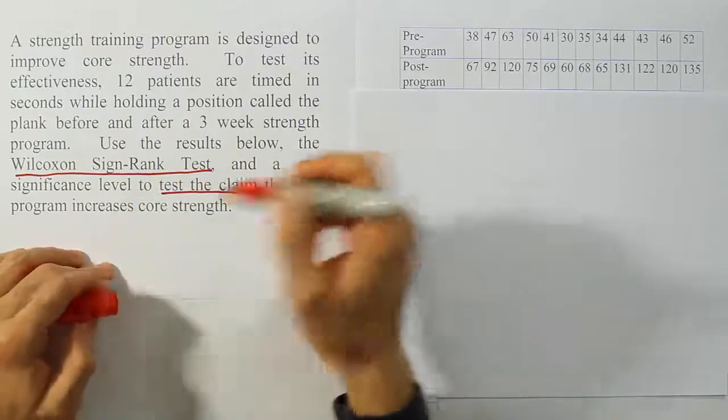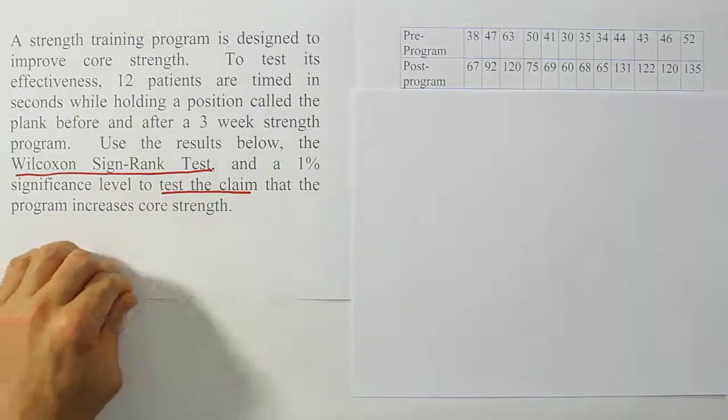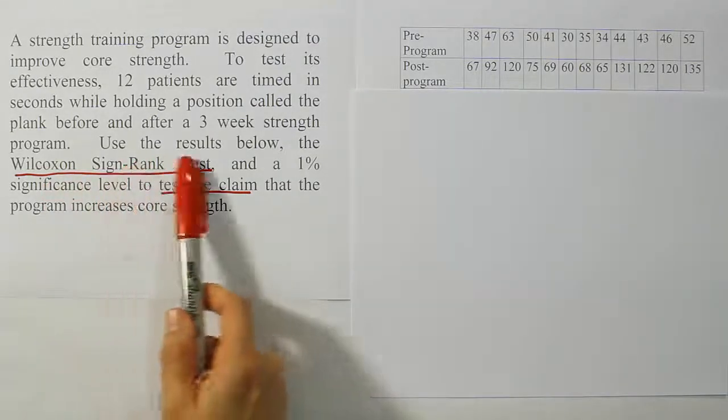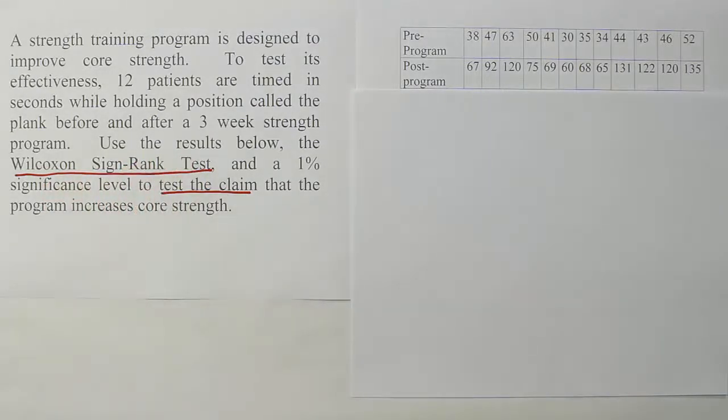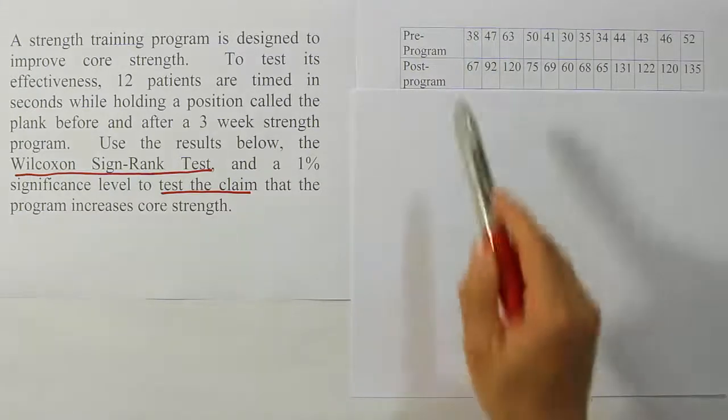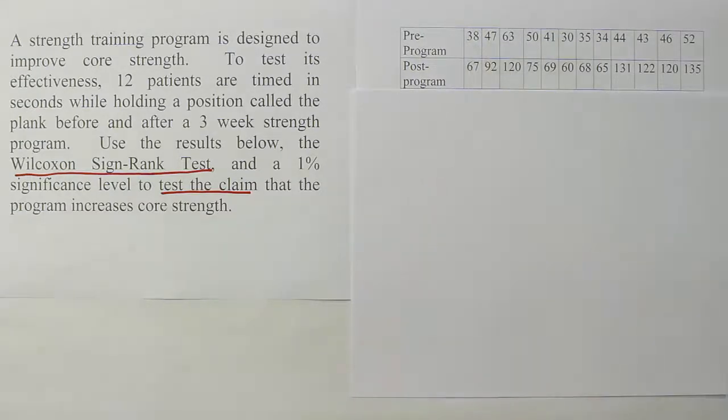And notice it says the alpha level is 1%. So we have some pre-program, post-program data. That's pretty classic for the Wilcoxon Sign-Rank Test. It usually involves a dependent sample, or a pair of dependent samples. So we have a pre-program, post-program. Each one of these points comes from the same person, right? So every column represents one person that's been tested before and after a training program.